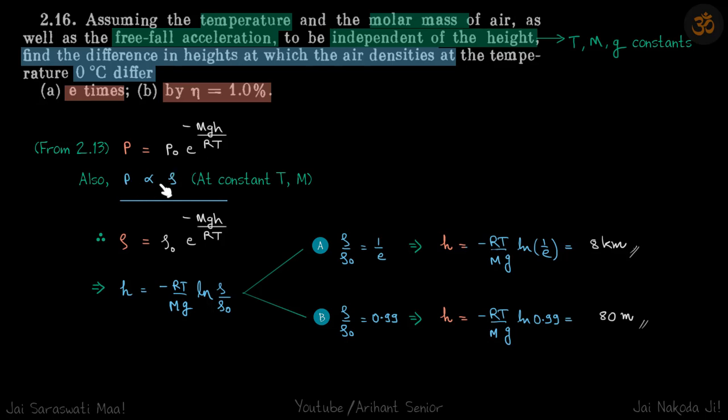Basically, because pressure is proportional to ρ, we can just write P/P₀ as ρ/ρ₀, which will give this relation. So if pressure is proportional to ρ, we can say P/P₀ is equal to ρ/ρ₀, which means ρ is equal to ρ₀ times this.